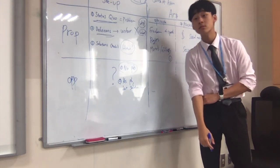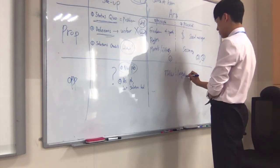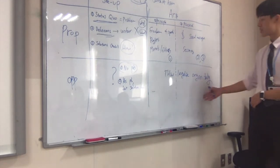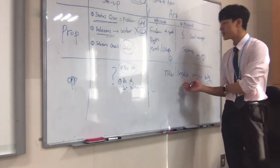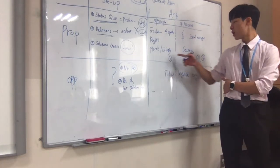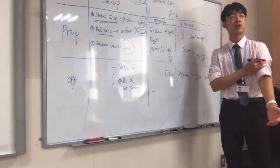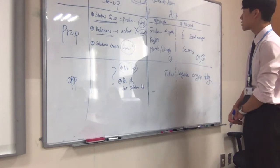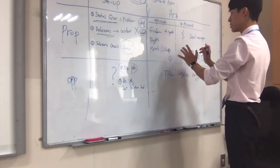Let's say the topic is 'this house will legalize organ trading,' which is basically allowing people to sell their organs to other people. The principle argument in this case might be the freedom to do whatever you want with your own body. That would be the principle argument, while practical arguments could be how an individual could earn money by selling an organ and how that money could be used for things like sending their kids to college if they're a poor family that can't afford expensive tuition. You can run these two parallel types of arguments to have a really strong case.